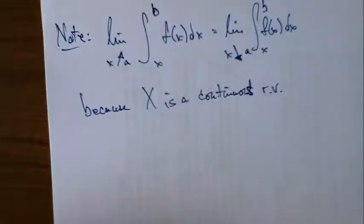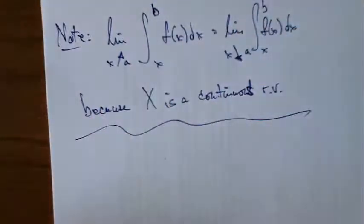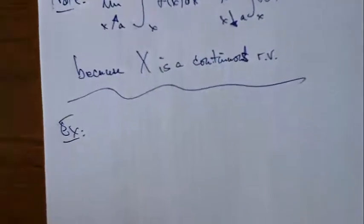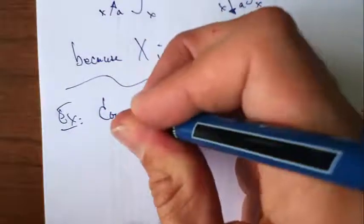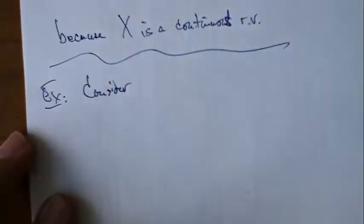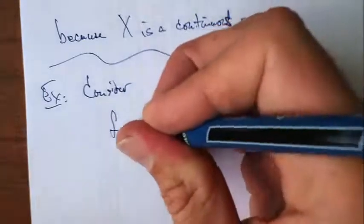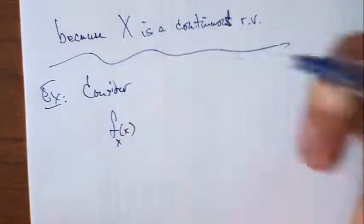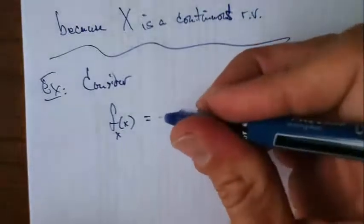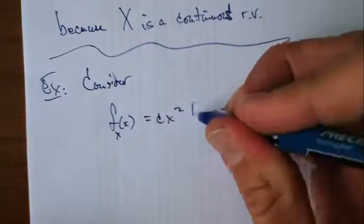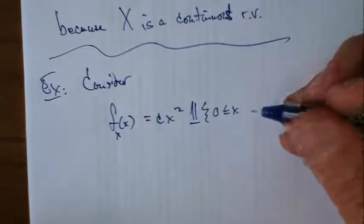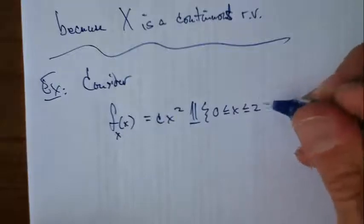Let's do an example. Here's a good way to start. Consider the PDF for the random variable called x. And let's say it's equal to c times x squared times the indicator function of x being between 0 and 2.